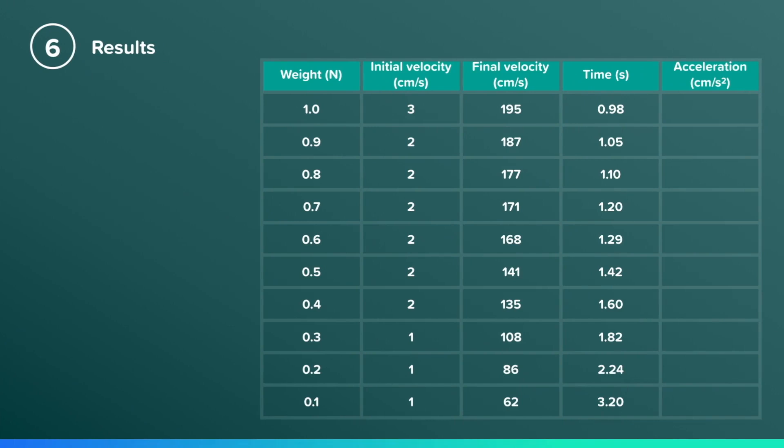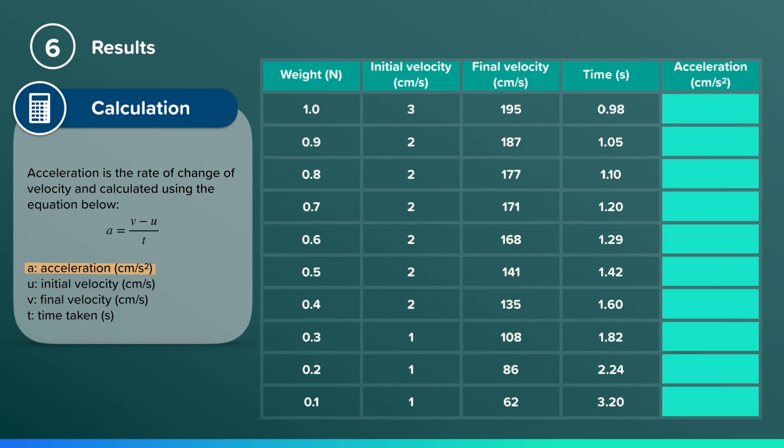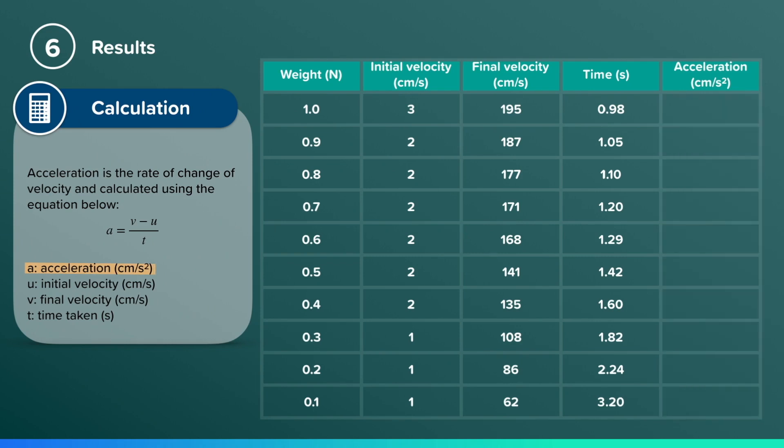Acceleration is the rate of change of velocity. And to calculate it, we're going to look at the change in velocity divided by the time taken. The change in velocity is equal to the final velocity minus the initial velocity. U is the initial velocity, V is the final velocity, and T is the time taken.